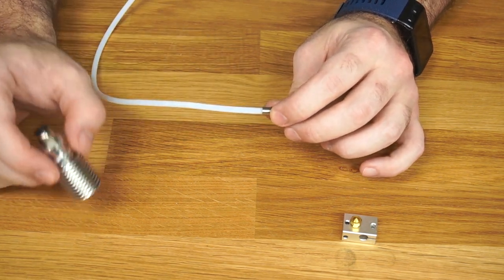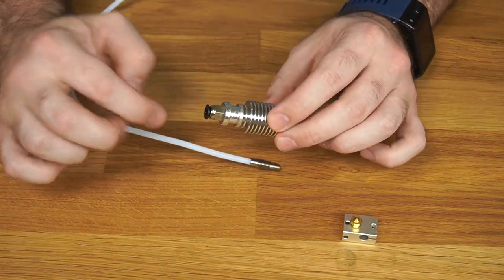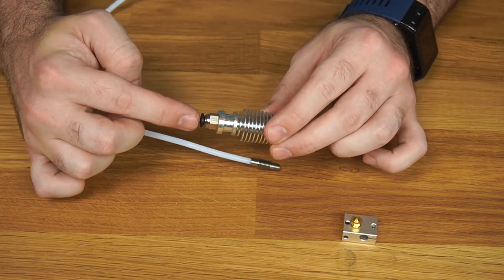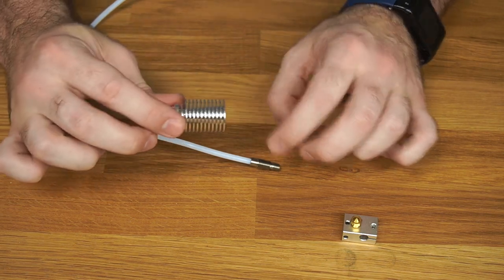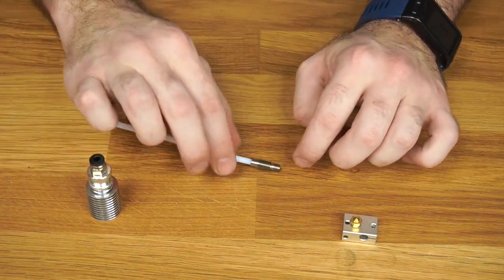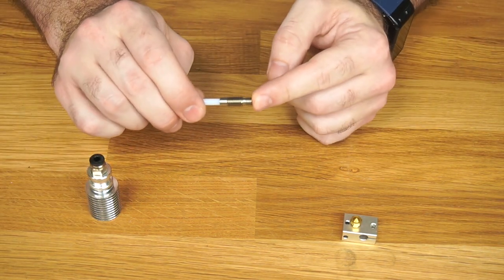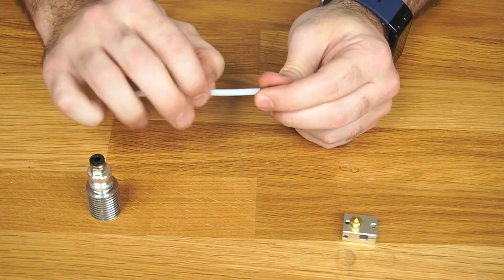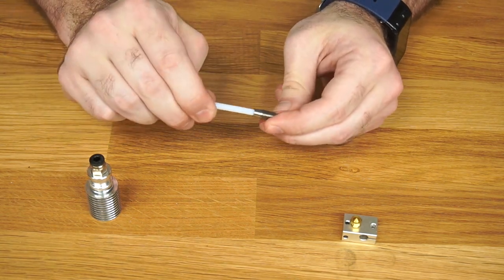If you try to stick this tubing, your Bowden tube, all the way through this fitting, and then all the way down inside the heat brake, it's very difficult to push this through because this is very slick material, and it takes a lot of force.